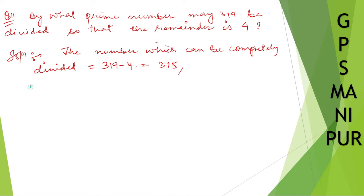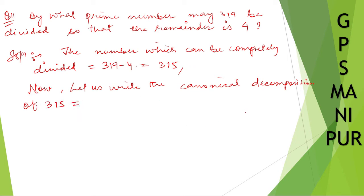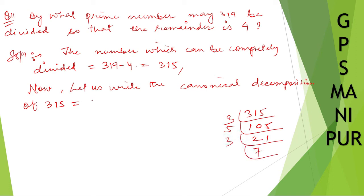Now let us find the prime factors, or canonical decomposition, of 315. So 315 can be divided by 3: 315 ÷ 3 = 105; 105 ÷ 3 = 35; 35 ÷ 5 = 7. So 315 = 3 × 3 × 5 × 7.